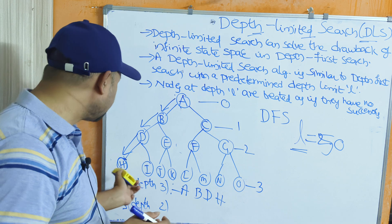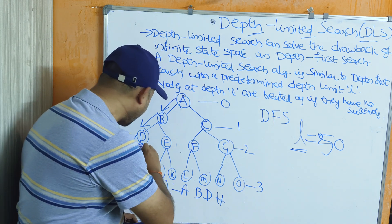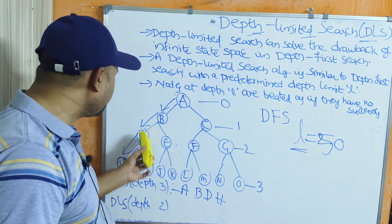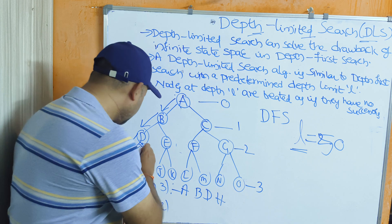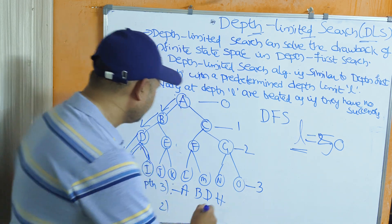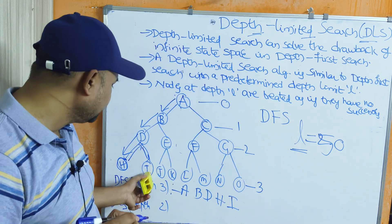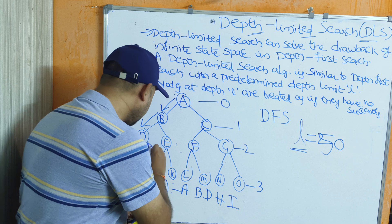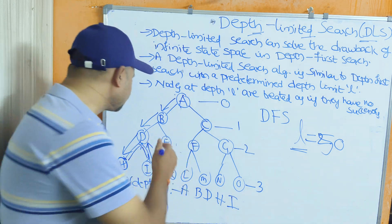Since H has no children, we backtrack. Now we check if D has any remaining children — yes, we explore I. After H, we backtrack to get to I. I also has no children, so we backtrack again. All children of D are now explored.